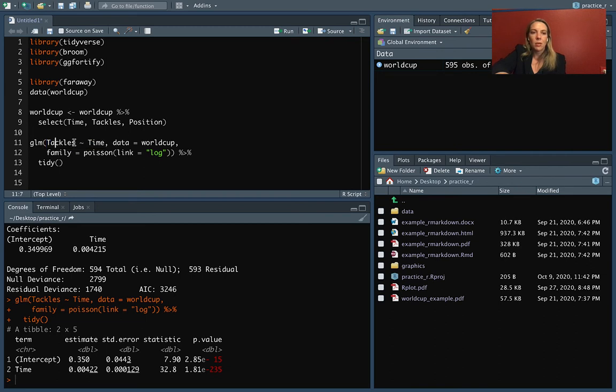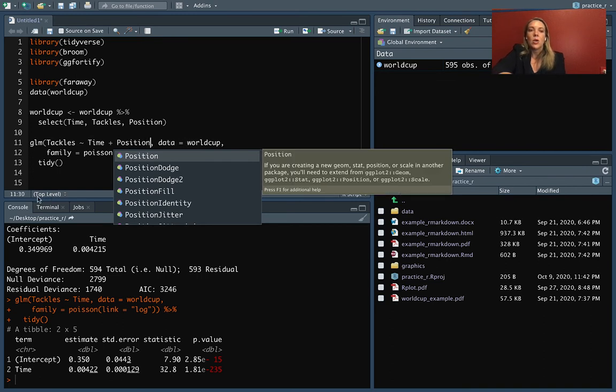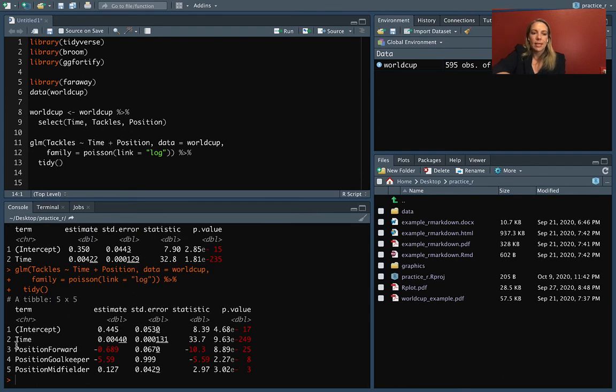So far, we've just taken the dependent variable and put it first, and then done a tilde, and then we've done independent on the right-hand side. If we have more than one independent variable that we want to include, we can do the plus sign to link those. So this is going to do both time and position. And if we fit that, we can see now we've got time, but then we've also got these estimates for each of the different levels of the position factor, other than the first one, defender, which is serving as the default baseline.